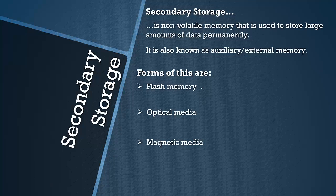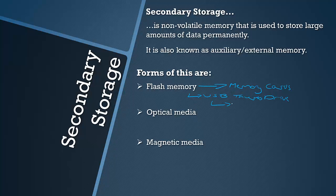An example of a type of flash memory would be a memory card — you see these in cameras and video cameras — and also a USB thumb drive. Also SSDs, but we'll look at those in a moment. For optical media, an example would be CDs and DVDs — anything that's a disc and shiny is pretty much to do with optical media.